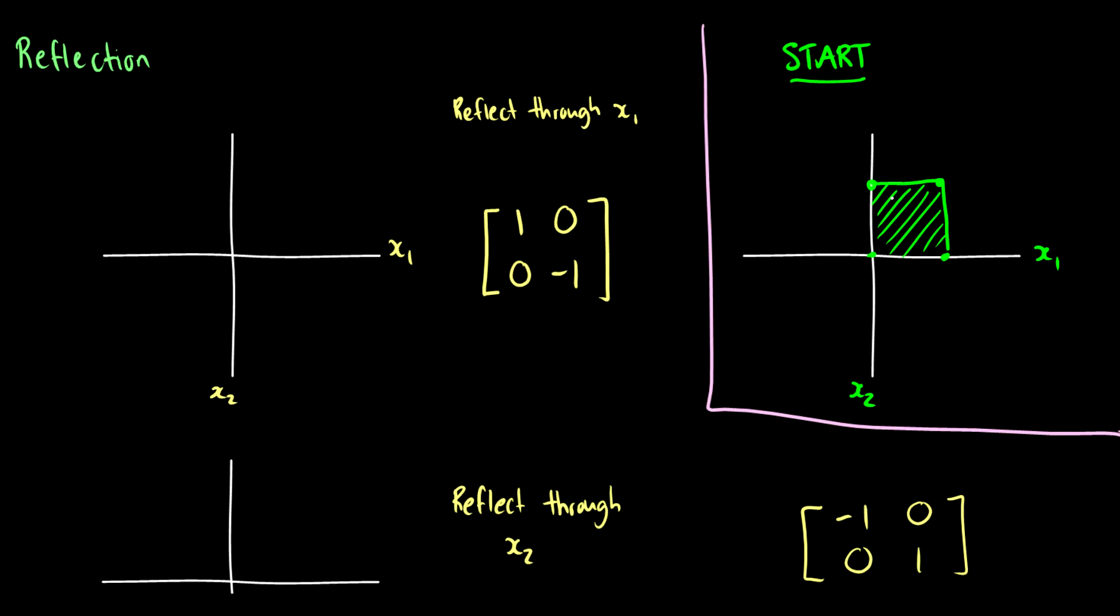Our first matrix is reflecting through x1. So this is [1, 0, 0, -1]. What this means is we take 1x1 and we take -1x2. So this takes all the points on the x2 axis and makes them negative. All of these x1s are still the same, but this x2 here gets flipped. So we get this sort of flip where we had the box and it moved or reflected through the x1 axis.